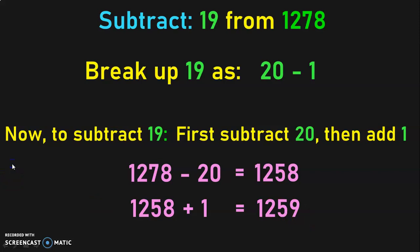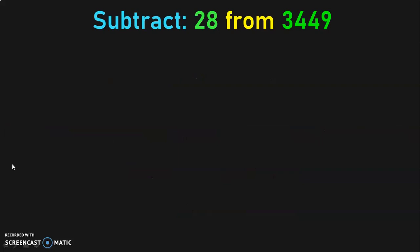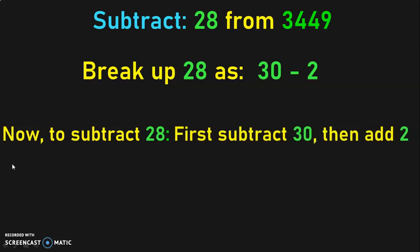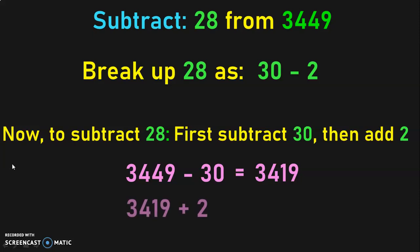Let us do another example. Subtract 28 from 3449. The nearest tens to 28 is 30. So, we are going to break up 28 as 30 minus 2. To subtract the given number by 28, first subtract by 30 and then add 2. So, 3449 minus 30 gives 3419. Next, add 2 to get the answer 3421. When you subtract 28 from 3449, you get 3421. This method of mental mathematics is much faster than writing numbers one below the other and borrowing to find the answer.